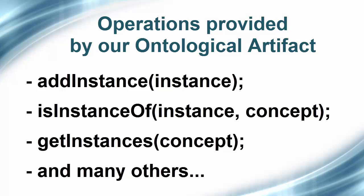An artifact in Cartago makes its functionalities available to agents through a set of operations. The operation AddInstance adds a new instance in the ontology. The operation IsInstanceOf verifies if the instance belongs to the given concept, returning true or false. The operation GetInstance retrieves a set of named individuals, which are the instances classified in a specific concept. For more operations regarding properties, concepts, and other available operations of our artifact, please see our paper.